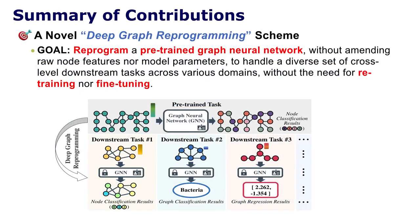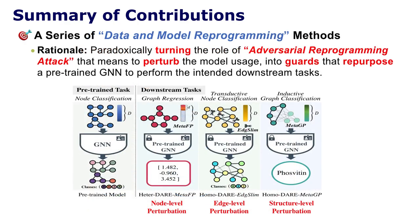The contributions of this work are two-fold. First, we propose a novel deep graph reprogramming scheme. The goal of deep graph reprogramming is to reprogram a pre-trained graph neural network, without amending node features nor model parameters, to tackle various downstream tasks without the need for retraining or fine-tuning. Second, we develop a series of data reprogramming and model reprogramming methods. The proposed methods turn the role of adversarial reprogramming attacks into guards that repurpose a pre-trained model to perform intended downstream tasks, including node-level, edge-level, and structure-level perturbation.